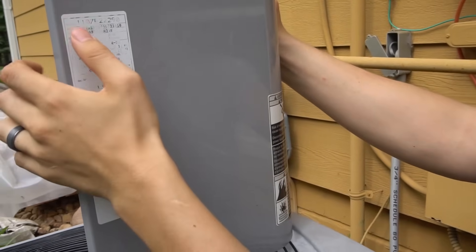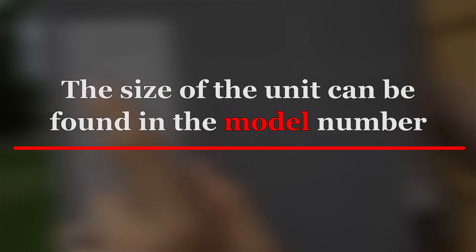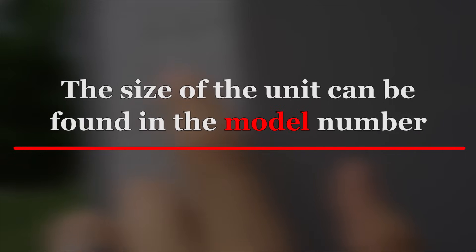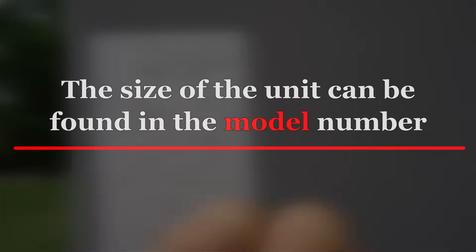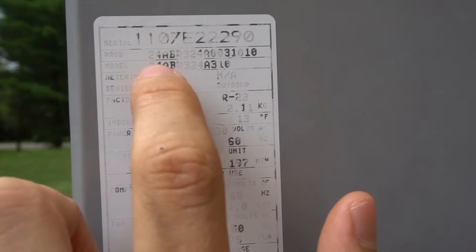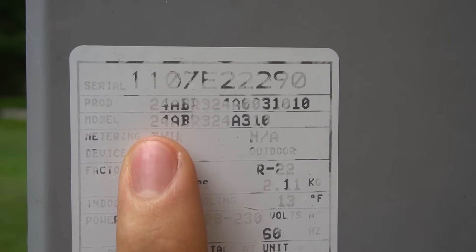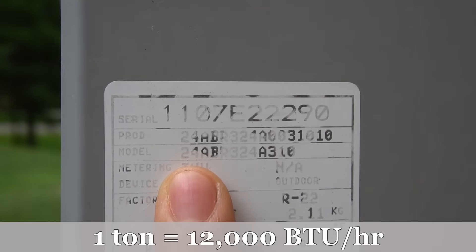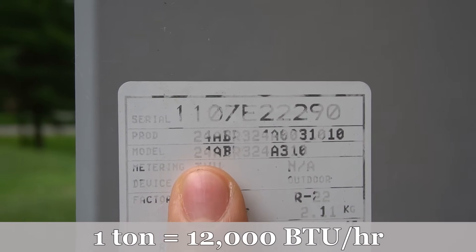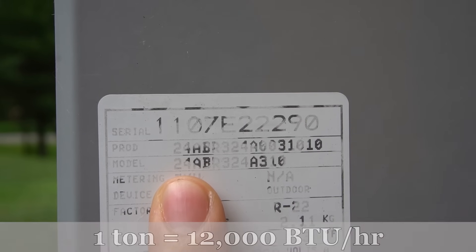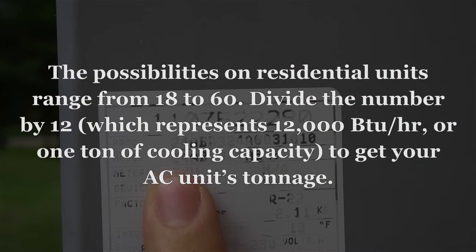You're going to look for a series of two even numbers, which are usually going to be either in the beginning or in the middle. So in my case, it's actually kind of weird. It's in the beginning and the middle, 24 right there. That will be the tonnage of your unit. And what this number means is basically one ton of cooling capacity. So one ton of cooling capacity is 12,000 BTUs per hour. It'll go 12, 24, 36, 48 for one ton, two ton, three ton, four ton.